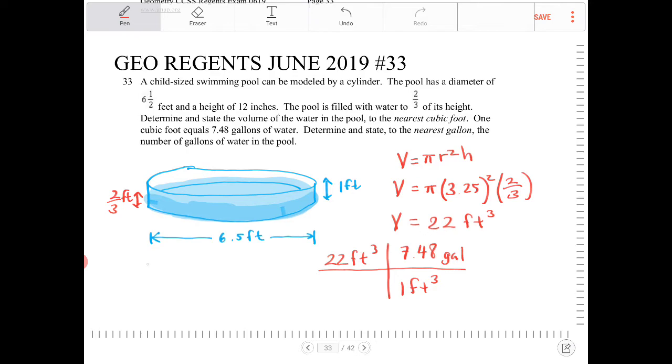So I want one cubic foot in the denominator and 7.48 gallons up top. 7.48 gallons per cubic foot is the same as 7.48 gallons over one cubic foot. See what I did there? By rearranging like this, the cubic feet will cancel, and gallons is the only unit left.